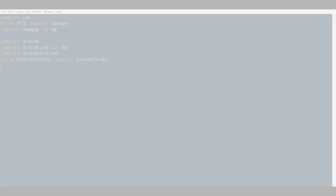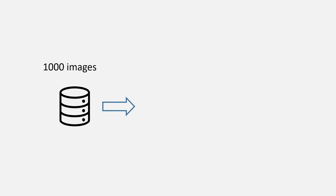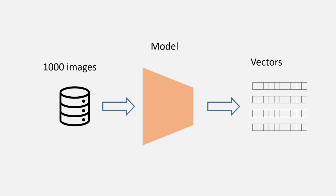The way we approach the problem is: we will be given a database with a thousand images, then we will be passing all these images to a model, and from this model we will be getting vectors. Once we get these vectors, we will do some operations on them and finally get the similar images.